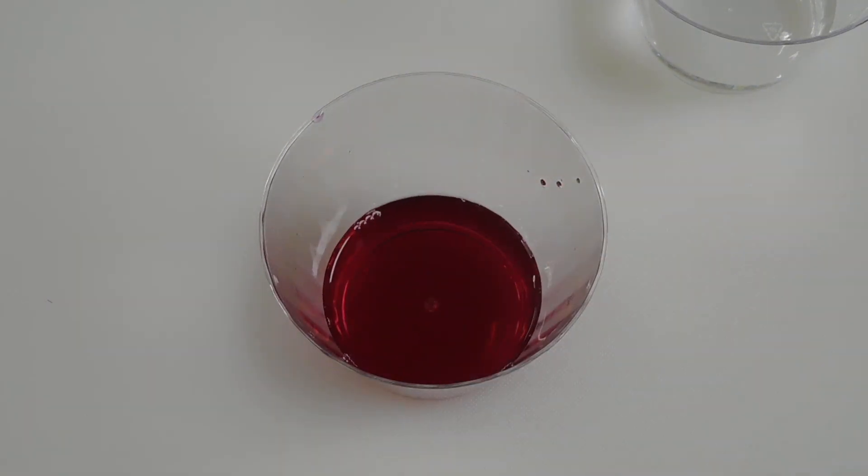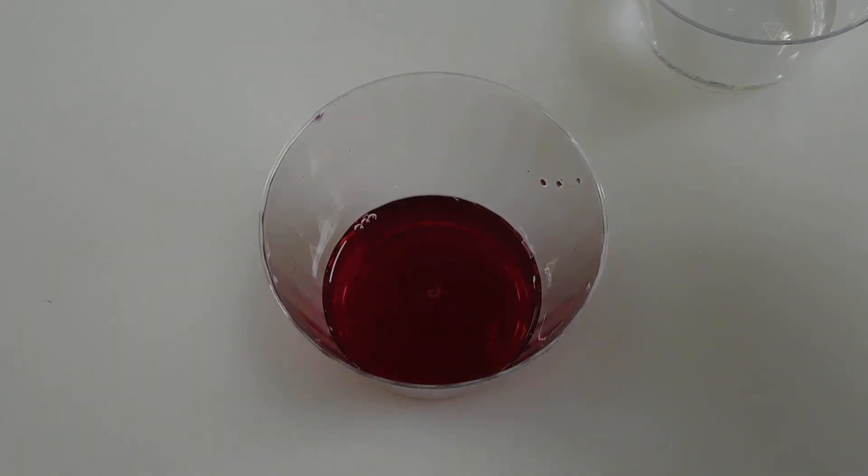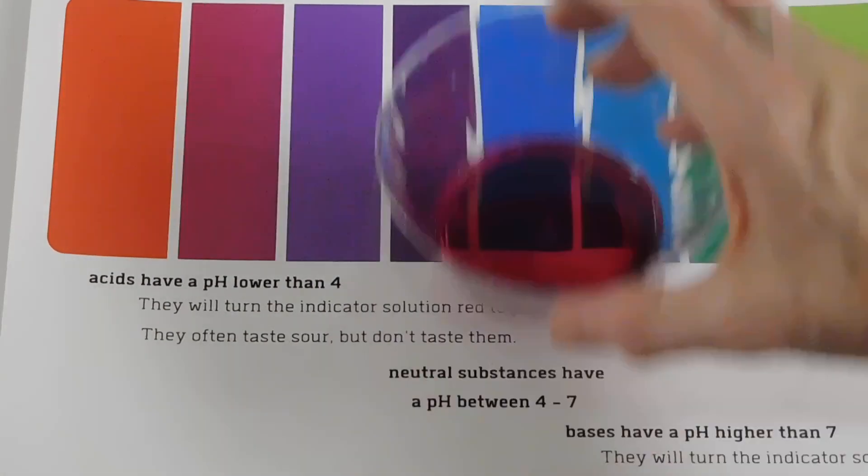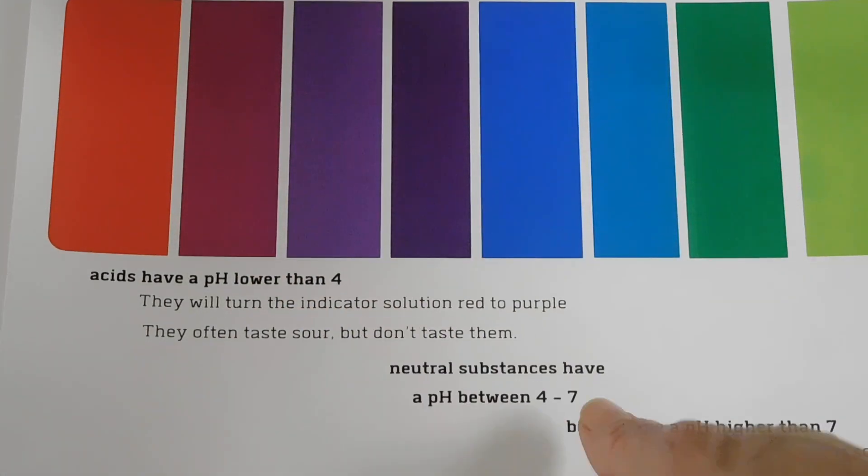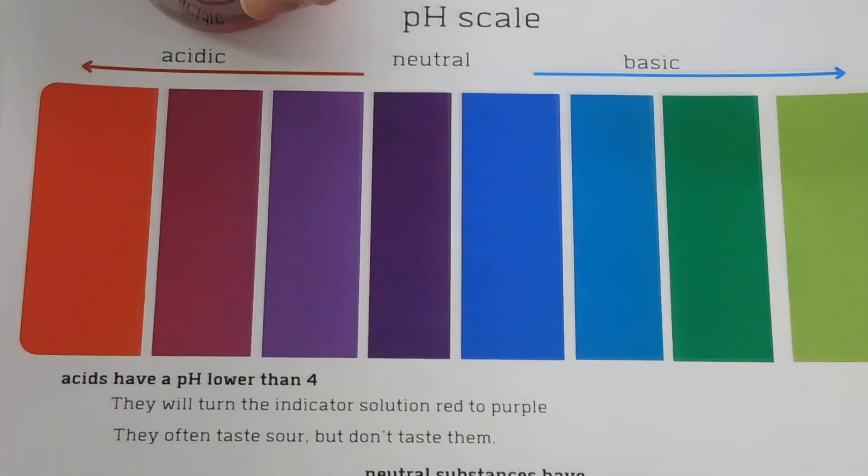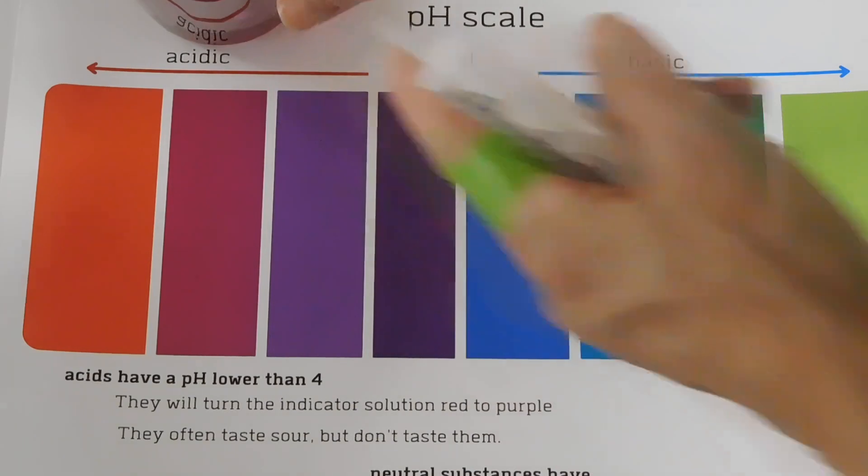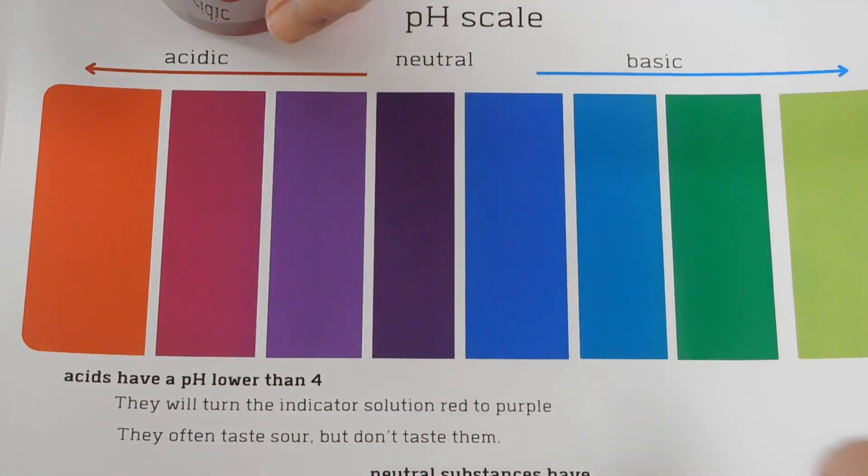So the vinegar turns the indicator a rosy pink. If we bring over the color strip, we can see that the rosy pink is about right there. So vinegar is definitely an acid. Let's set that on the side and let's give something else a try.